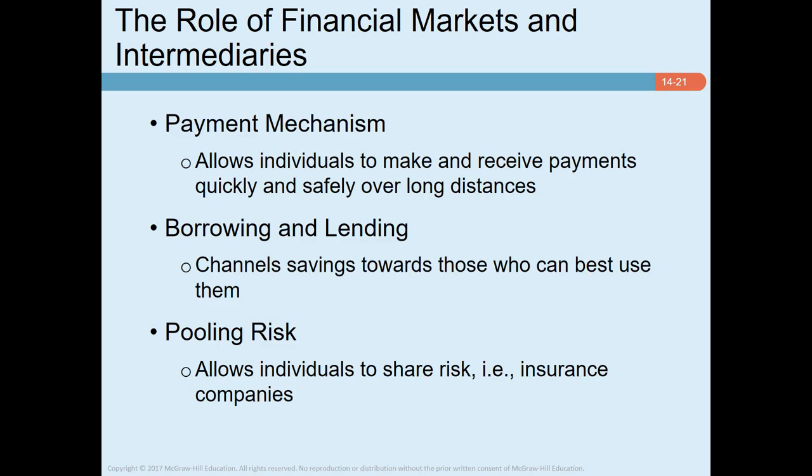What are the main roles of financial markets and intermediaries? First is the payment mechanism. Think how inconvenient life would be if all payments had to be made in cash. Fortunately, checking accounts, credit cards, and electronic transfers allow individuals and firms to send and receive payments quickly and safely over long distances. Banks are the obvious providers of payment services, but they are not alone. For example, if you buy shares in a money market mutual fund, your money is pooled with other investors and used to buy safe short-term securities, and you can write checks on this mutual fund investment just as if you had a bank deposit.